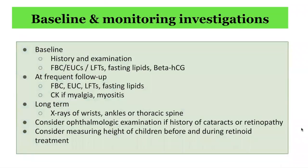In terms of baseline and monitoring investigations, make an assessment based on your local health district guidelines, but as a general guide: at baseline, history and examination should be performed, along with a full blood count, electrolytes, urea, creatinine, liver function testing, fasting lipids, and beta-HCG for females of the appropriate age group. At follow-up periods, which can be every two to three months, repeat blood testing should be performed. If there are symptoms of myalgia or myositis, creatinine kinase should be considered. For long-term isotretinoin or acitretin, consideration of imaging including x-ray of wrists, ankles, and thoracic spine is recommended. Ophthalmological examination may be warranted if there is a history of cataracts or retinopathy, and measuring the height of children before and after retinoid treatment is also suggested.